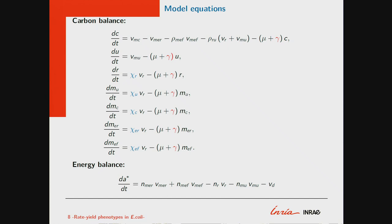We didn't have data to make degradation rates different across components. Most of the data are actually for proteins, because proteins are the most abundant part of the biomass. So we made the hypothesis that the degradation rate is the same. I don't think it would make much difference in the model, because maintenance costs are generally small.